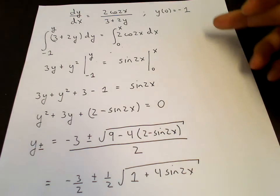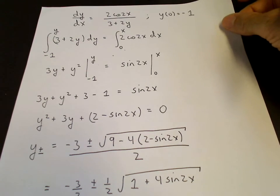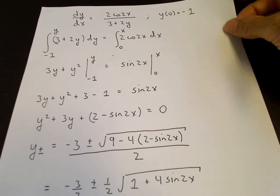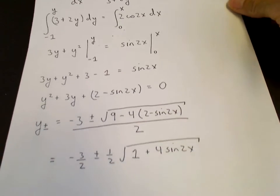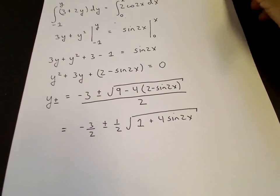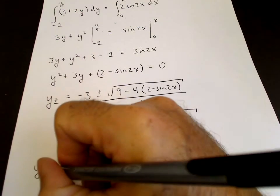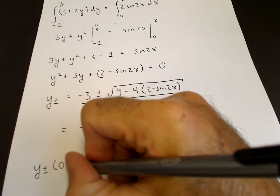So in order to determine which is our solution, where y of 0 equals minus 1, we have to look to see which of these roots satisfies the initial condition. So we do that.